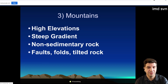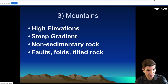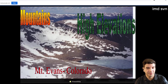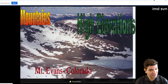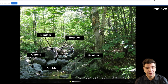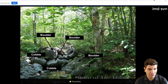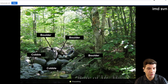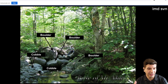Mountains: high elevation, steep gradient, non-sedimentary, faults, folds, tilts. Classic example, Mount Marcy. I climbed Mount Marcy — you can see lots of metamorphic rocks. It's not that round, horizontal, sedimentary. It's large boulders and cobbles.